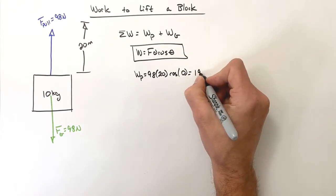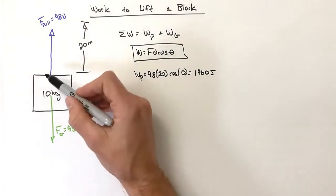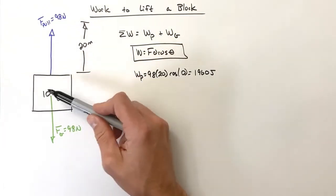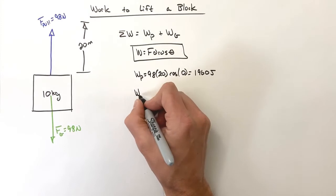This gives us a total work of 1960 joules. Ultimately, this pull force is giving energy to the block.